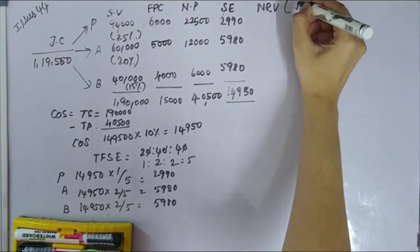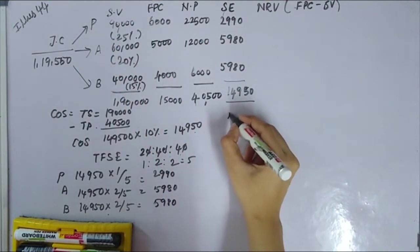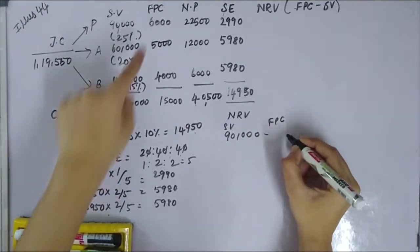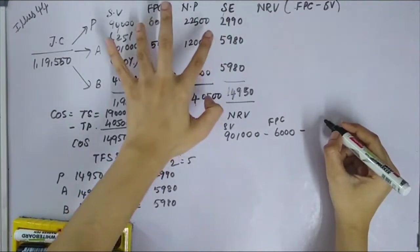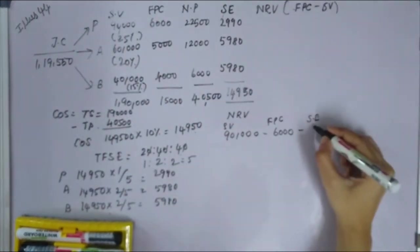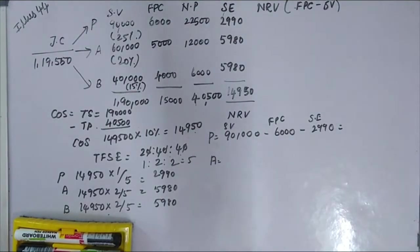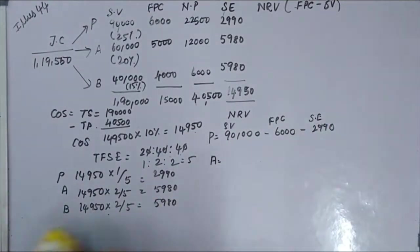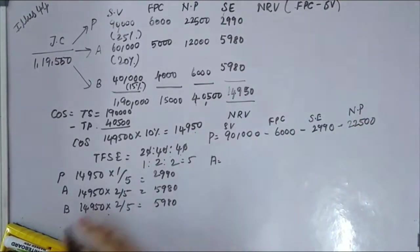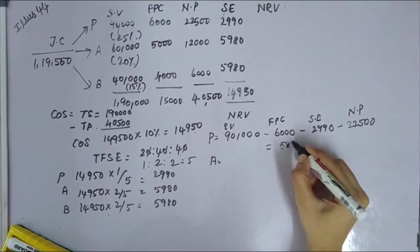NRV formula: sale value minus further process cost minus selling expenses minus net profit. For the main product: sale value 90,000, minus further process cost 6,000, minus selling expenses 2,090, minus net profit 22,500 — giving NRV of approximately 58,510.